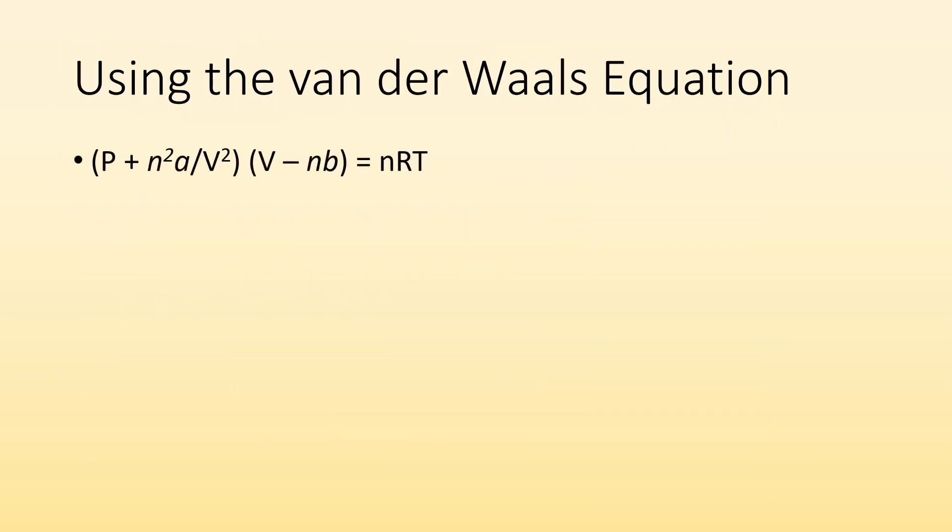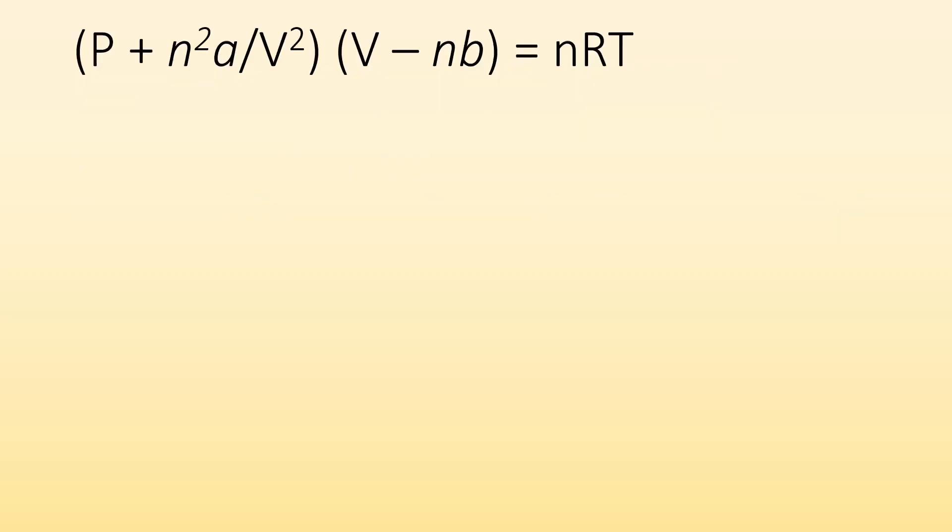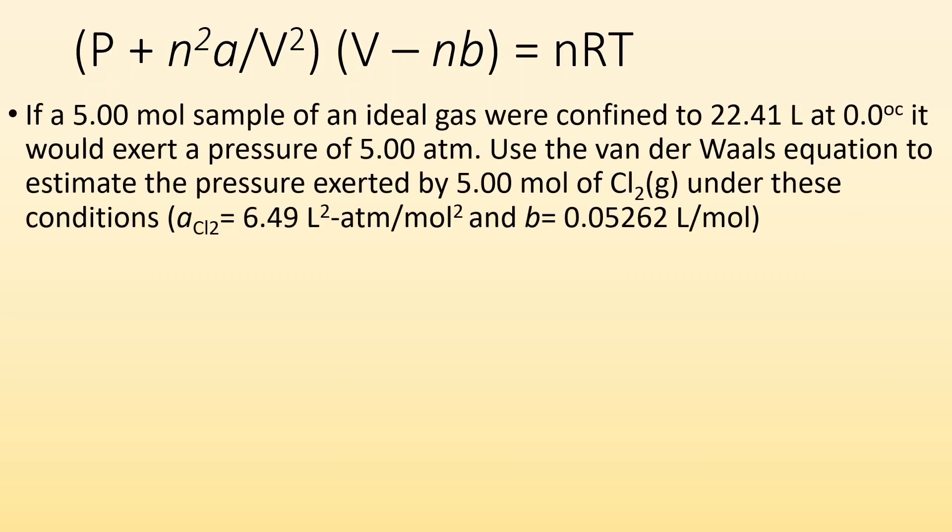Using the equation, there's nothing really special about using it. It's going to be, here's all the variables except for one, solve for that one. Rearrange for the thing you're trying to get and then plug and chug. An example: if a five mole sample of an ideal gas were confined to 22.41 liters at zero Celsius, it would exert a pressure of five atmospheres. That's what a perfect gas would do. Use the Van der Waals equation to estimate the pressure exerted by five moles of chlorine gas under these conditions. They tell us what the values for a and for b are.